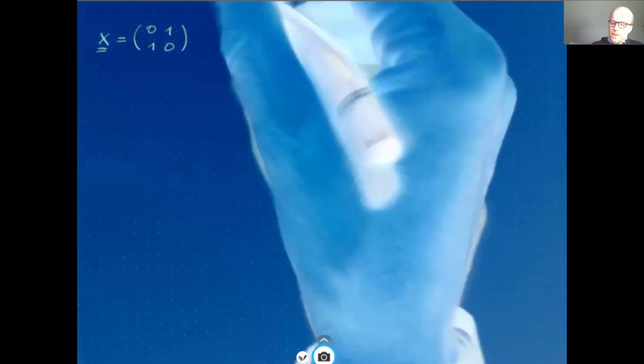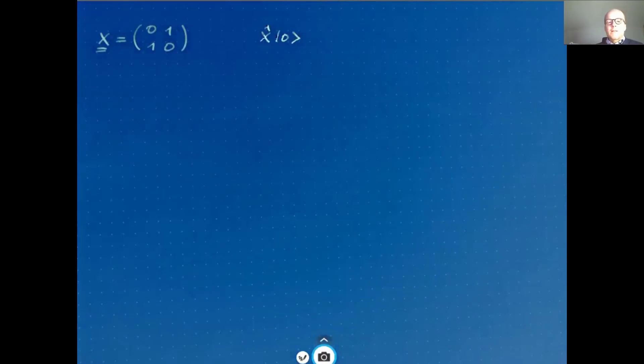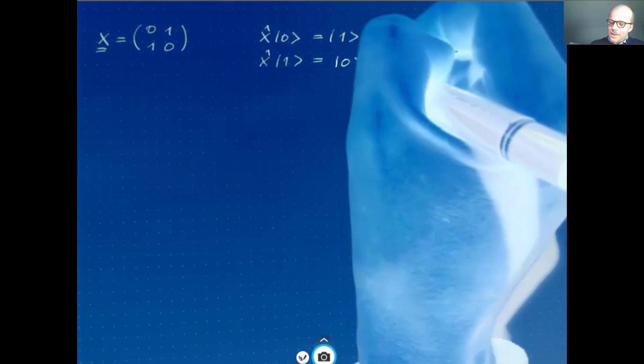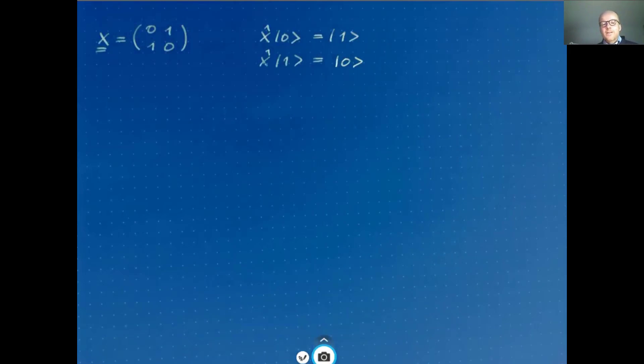Now what does the Pauli X operator do when it's applied to a basis state? Well the this form of the matrix tells us when we apply the Pauli X operator to a basis state 0 then the result is the basis state 1. And when we apply the Pauli X operator to basis state 1 then the result is the basis state 0. So the Pauli X operator flips the basis states. Well perhaps you can already anticipate that later in an algorithm this is a little bit like in a classical circuit the NOT operation. It flips a qubit from the 0 to the 1 state and vice versa.